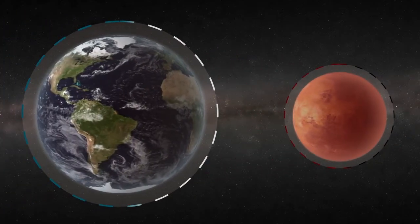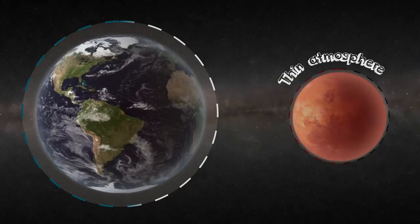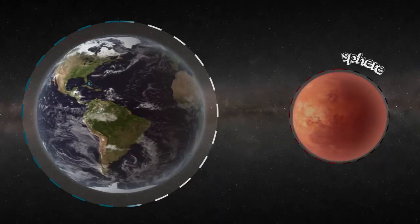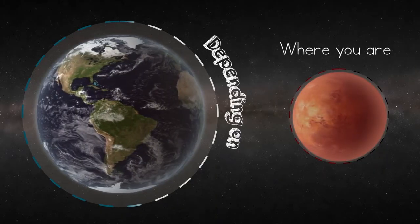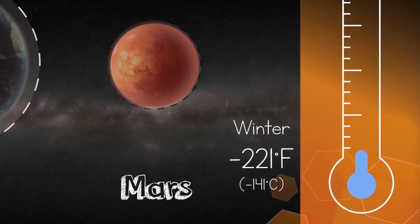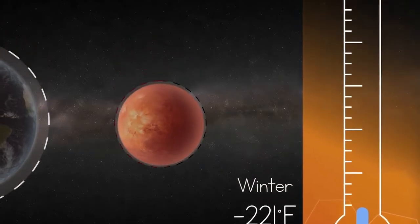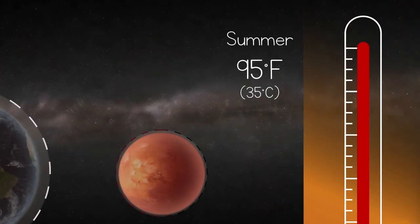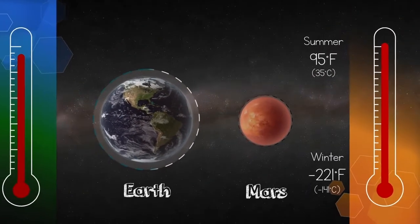Unlike Earth, Mars has a very thin atmosphere. Because of this, the temperature can change a lot depending on where you are and what time of year it is. It can get as cold as negative 221 degrees Fahrenheit in winter and as hot as 95 degrees Fahrenheit in the summer. That's a range of over 300 degrees.